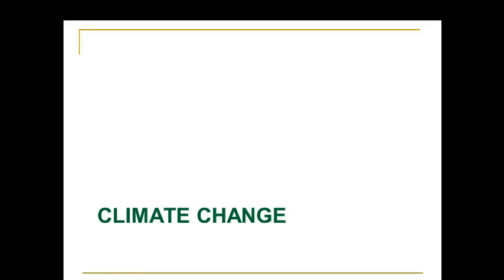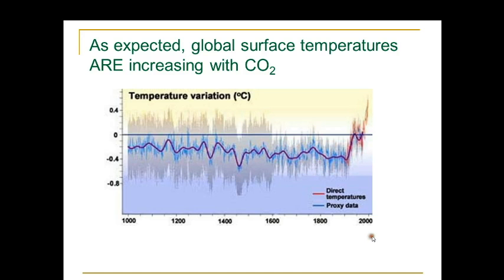In the first section we looked at the atmosphere. We also looked at CO2 and how it got into the atmosphere and its correlation with temperature. Now we're going to focus more specifically on climate change. As we saw in the last section, global surface temperatures are increasing with increased CO2.